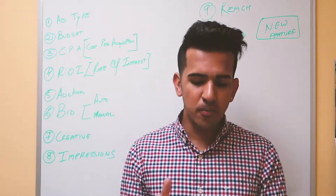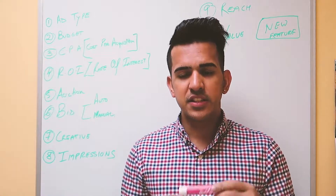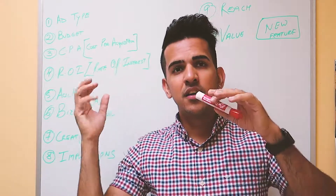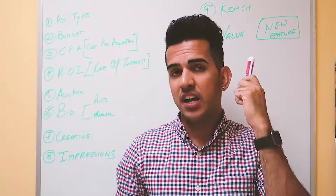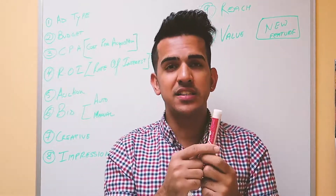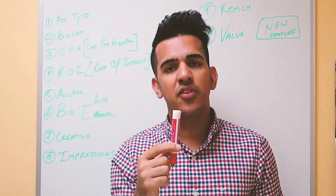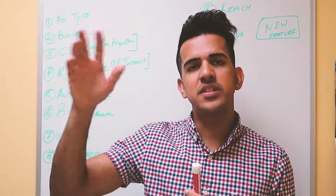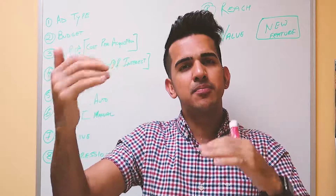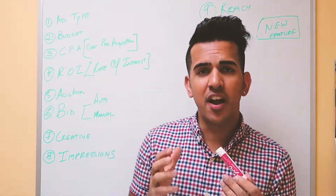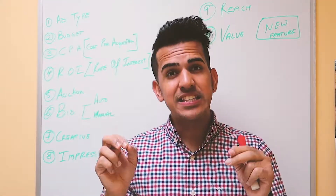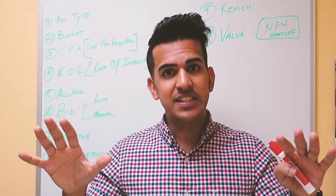Concept five is auction. In a normal auction, you're trying to sell a product and people bid on it — someone says a dollar, another says two dollars, another says three dollars — and the auction keeps going until no one beats the price. That is what an auction system is, and Facebook advertising is an auction system.